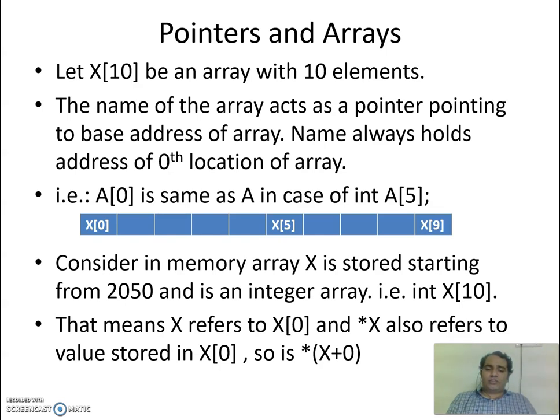Consider in memory array X is stored starting from 2050 and is an integer array. In the sense, the first element is at 2050. Second element would be after 2 bytes, because it is integer array. Every integer takes 2 bytes. So 2050, 2051 is given for first element. Second element starts at 2052. That means X refers to X[0]. And now this is dereferencing operator, value at address operator. Pointer *X also refers to value stored in X[0]. This is because this is equivalent to *(X+0). This is displacement, how far from X. That is to be added. That index is how far from starting position.